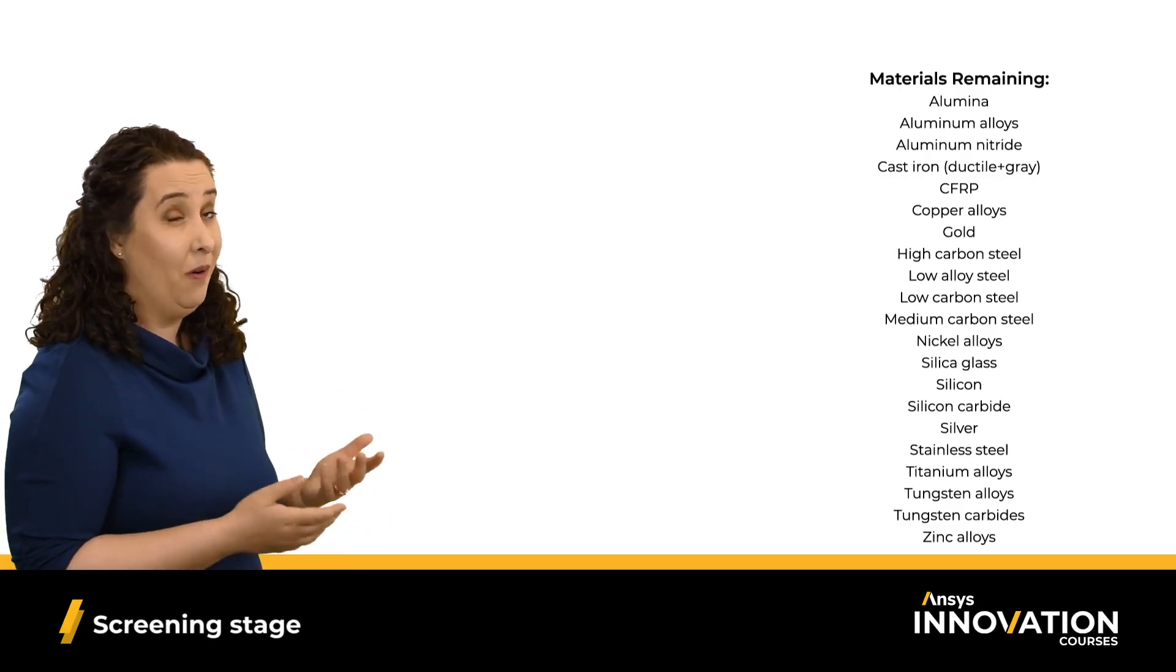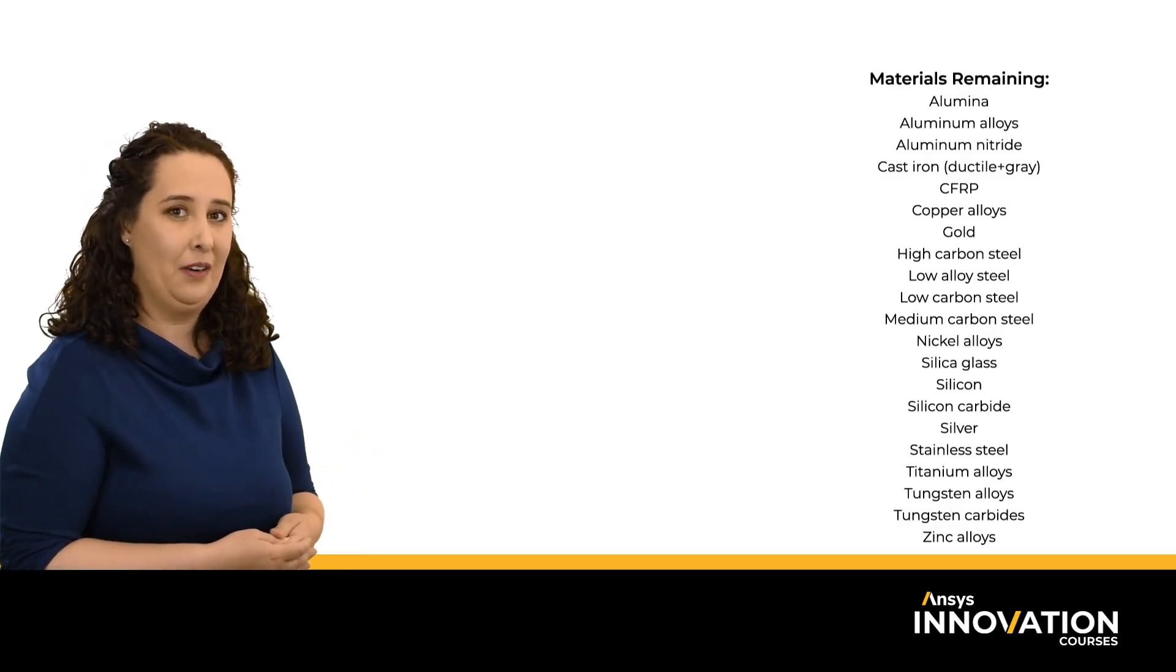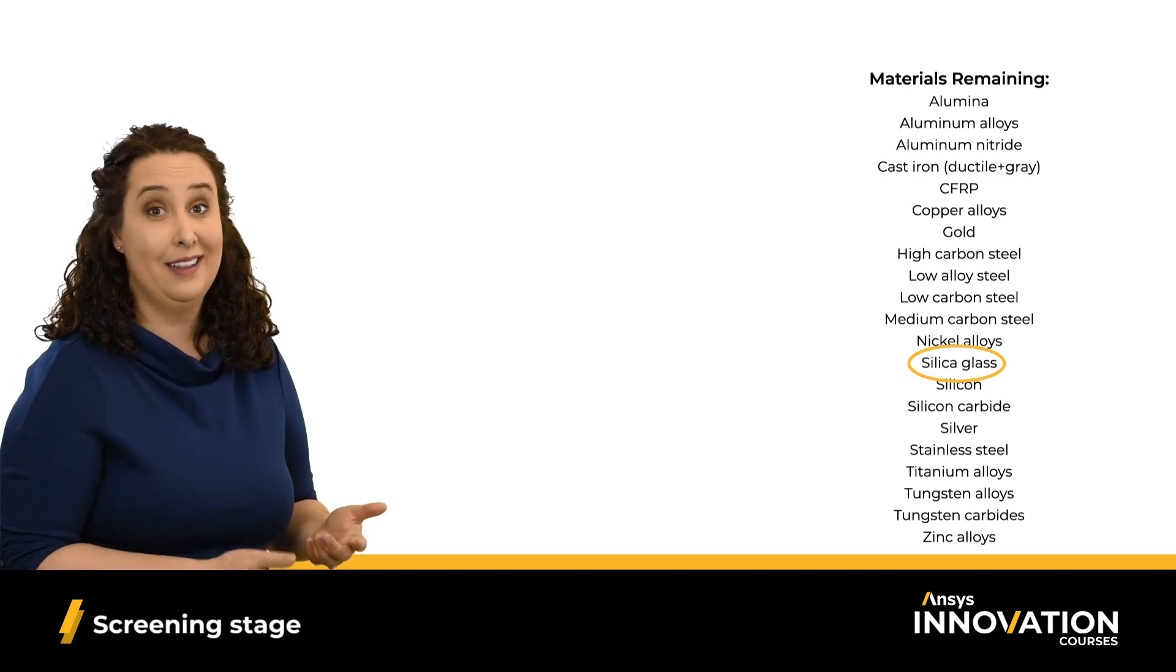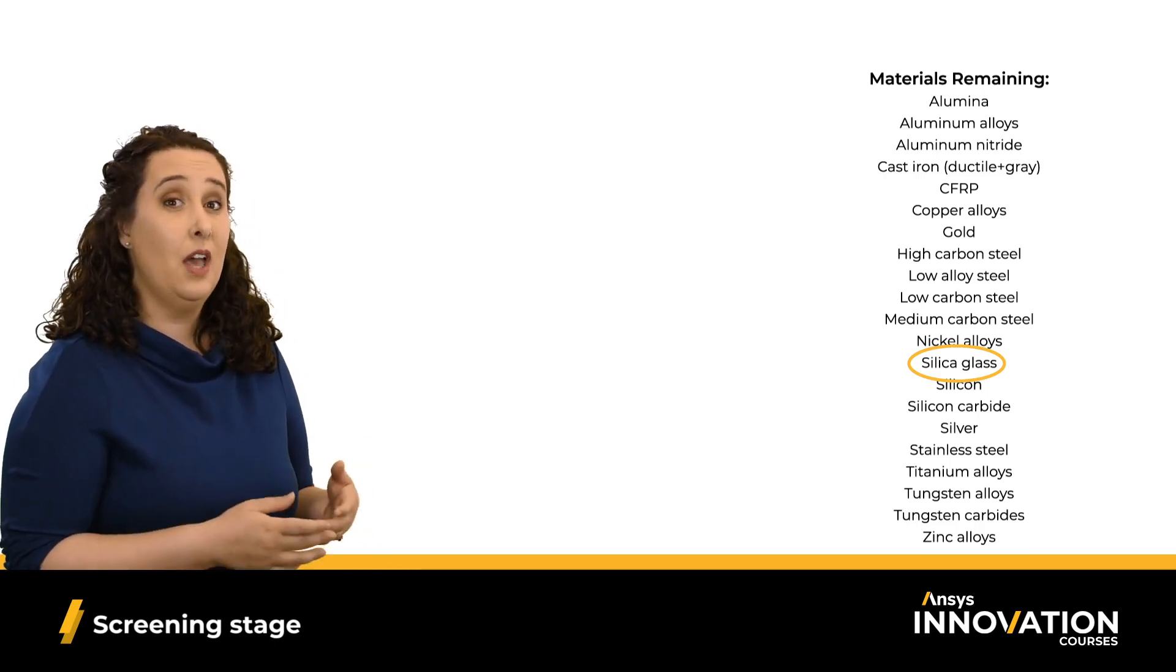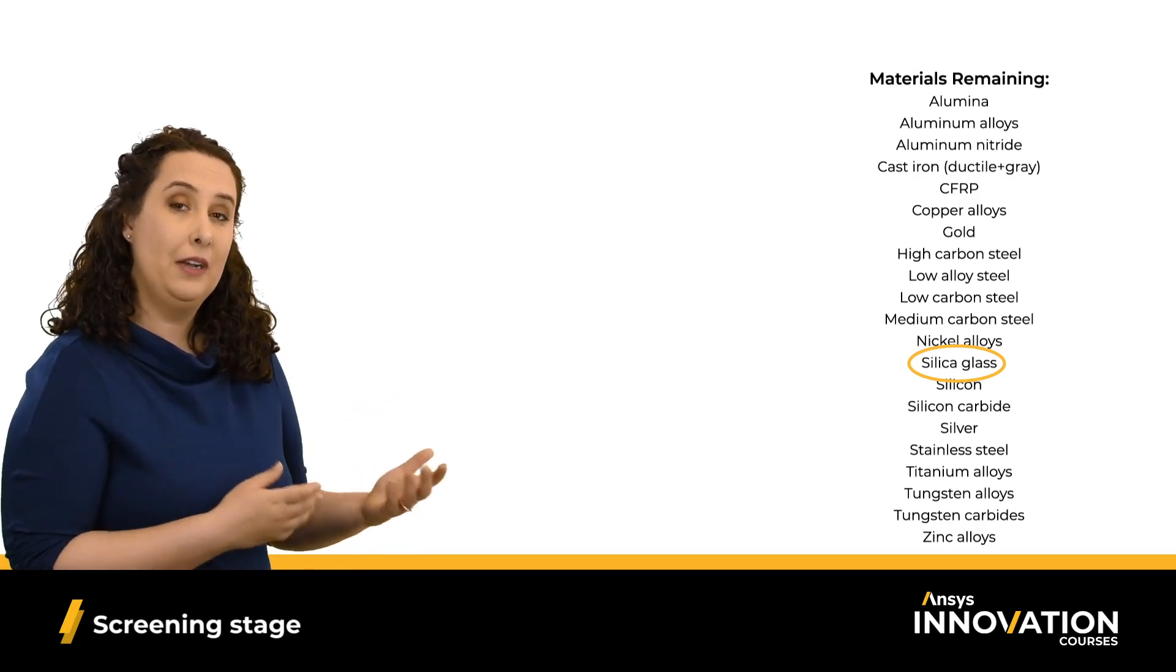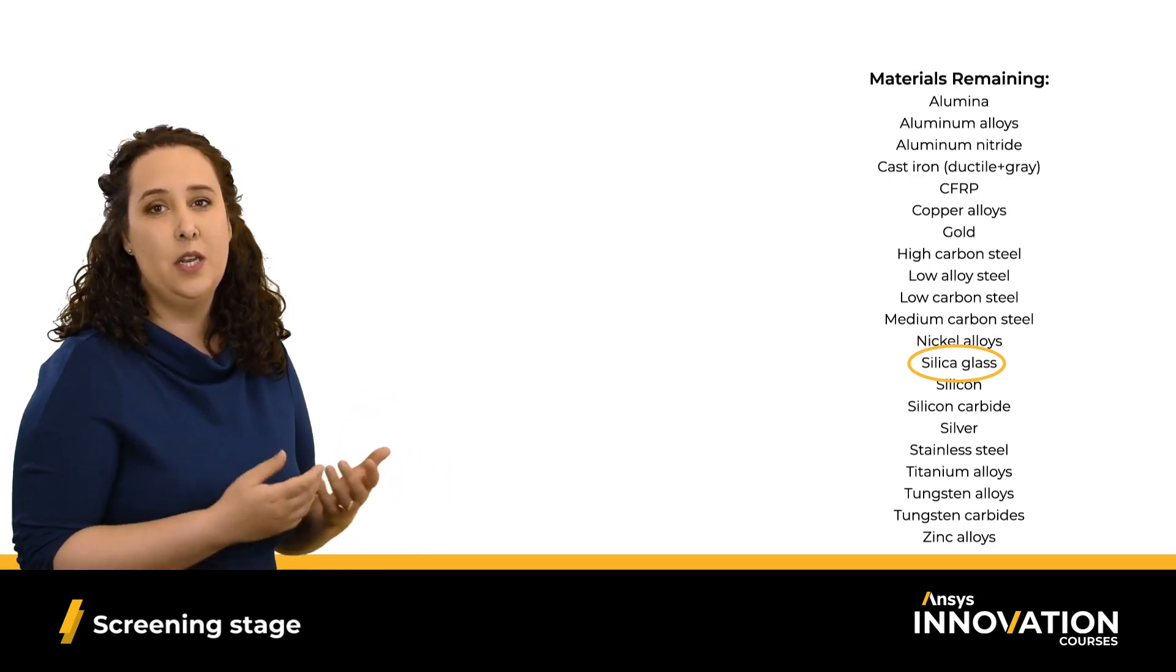Looking at this list, I can already see a material that's not going to work. Silica glass. Glass is not a suitable material for an airplane wing. So that means we need to go back to our design criteria and continue screening to remove all unsuitable materials.